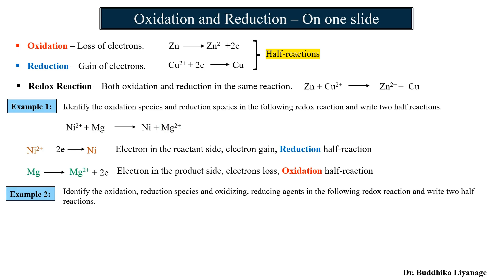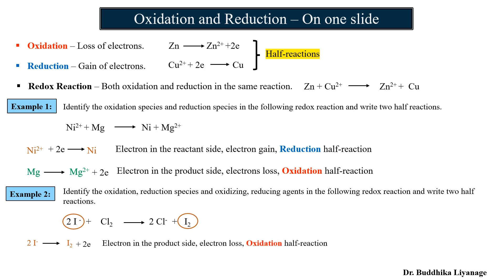Example two: identify the oxidation and reduction species, and the oxidizing and reducing agents in the following reaction. First, let's focus on iodide. Iodide (I⁻) is on the reactant side and I₂ is on the product side. A minus charge becomes zero charge by losing two electrons, so this is the oxidation half reaction.